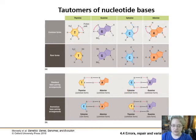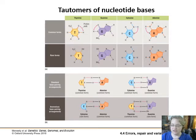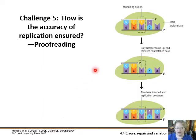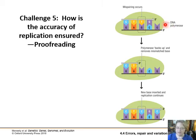Luckily, there is a system that goes back and tracks these changes because they do change the conformation of the helix a little bit. DNA polymerase can backtrack — it can go back, remove that base, and then continue forward in the five-prime to three-prime direction.